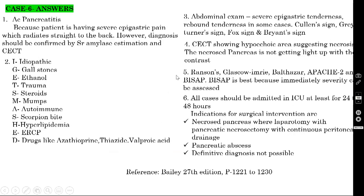There are different scoring systems to assess the severity of acute pancreatitis: Ranson's, Glasgow (Imrie), Balthazar, APACHE II, and BISAP. Among all these, BISAP is the best because you can immediately assess the severity of these cases.